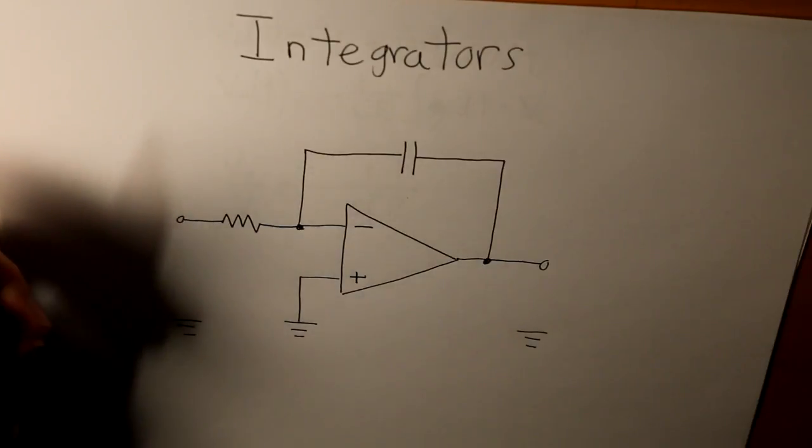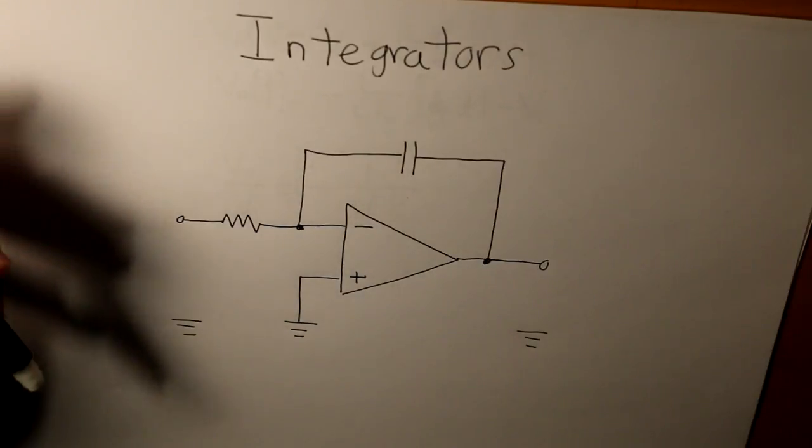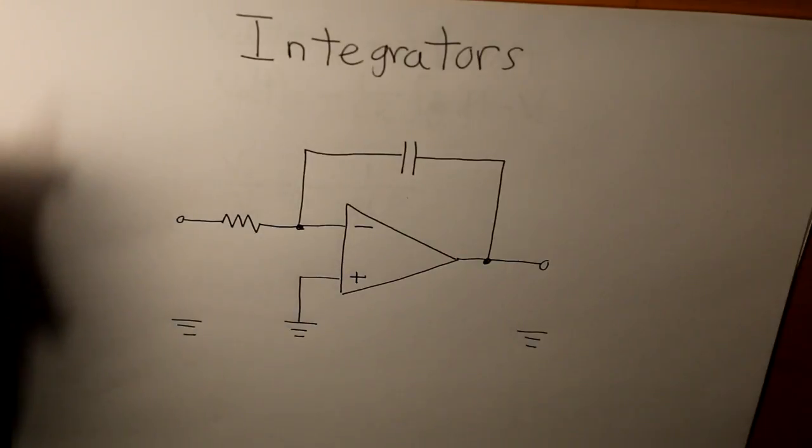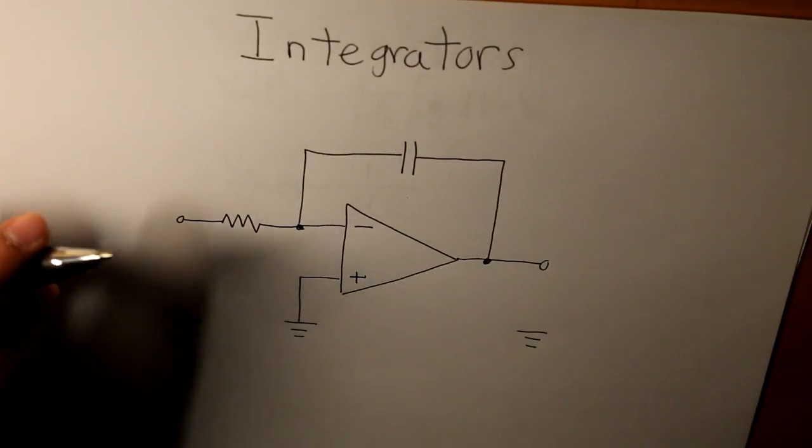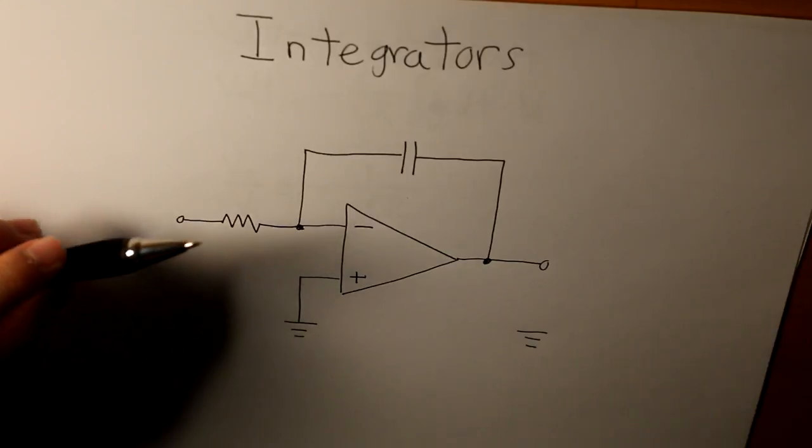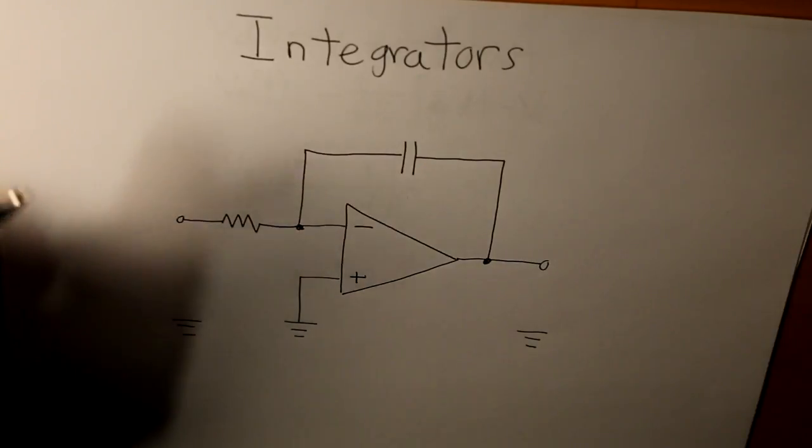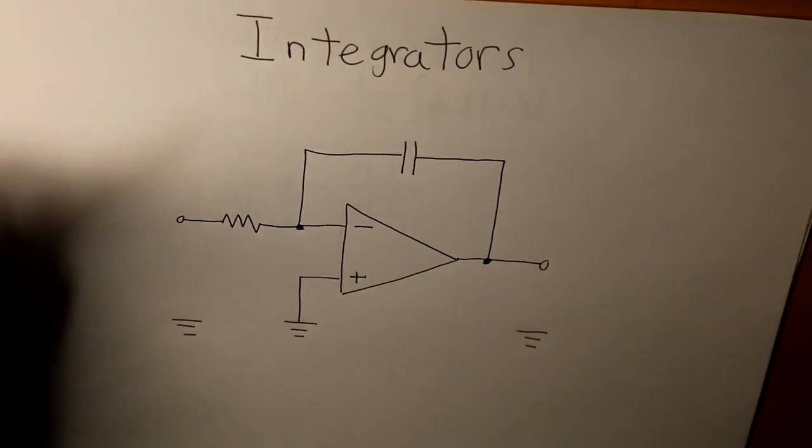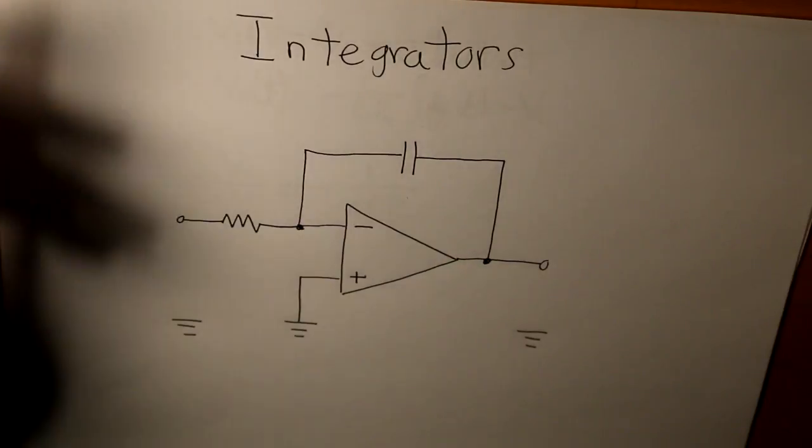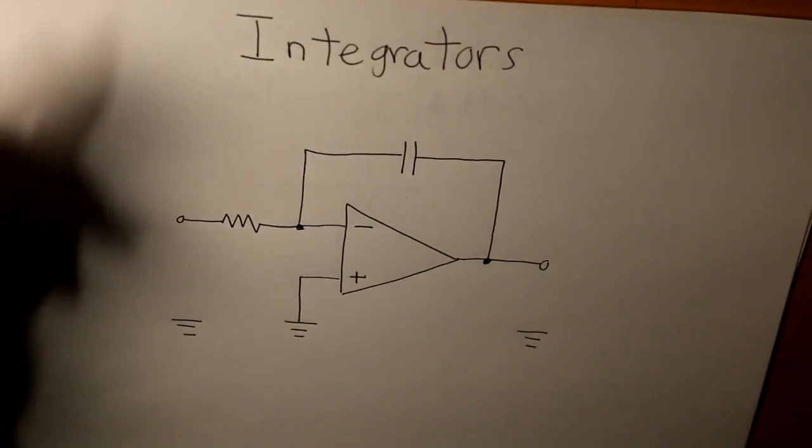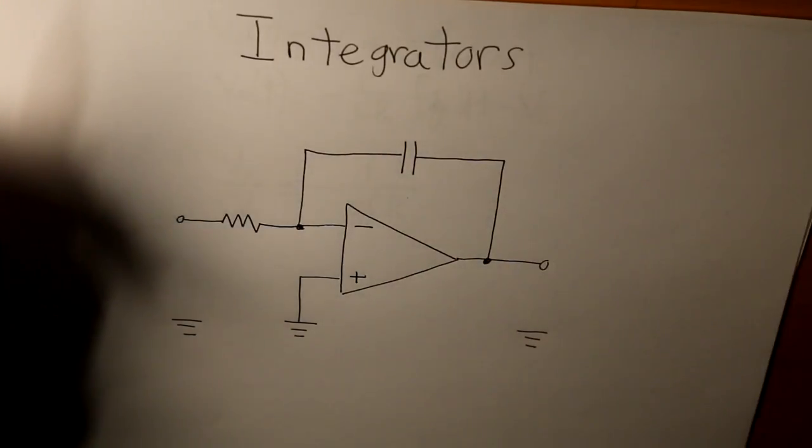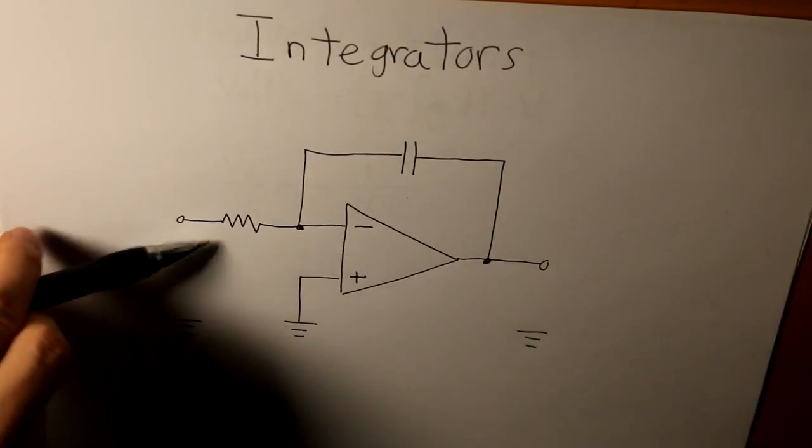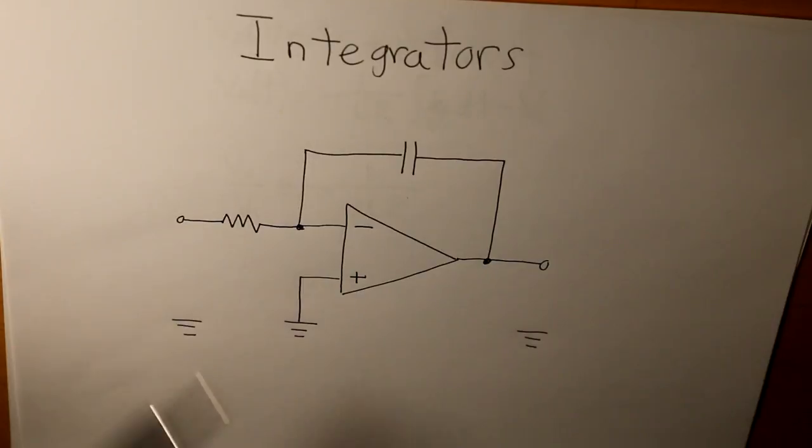The only thing that we change is that we replace the resistance that we used to have in an ideal op amp with a capacitor. What that capacitor is going to do is that when that current goes into the capacitor, it charges, and that's essentially where the integral magic happens.